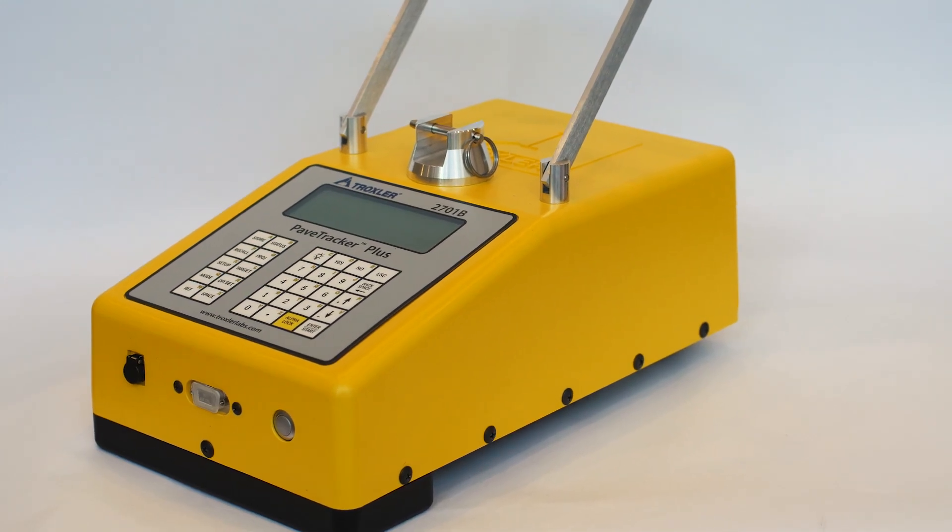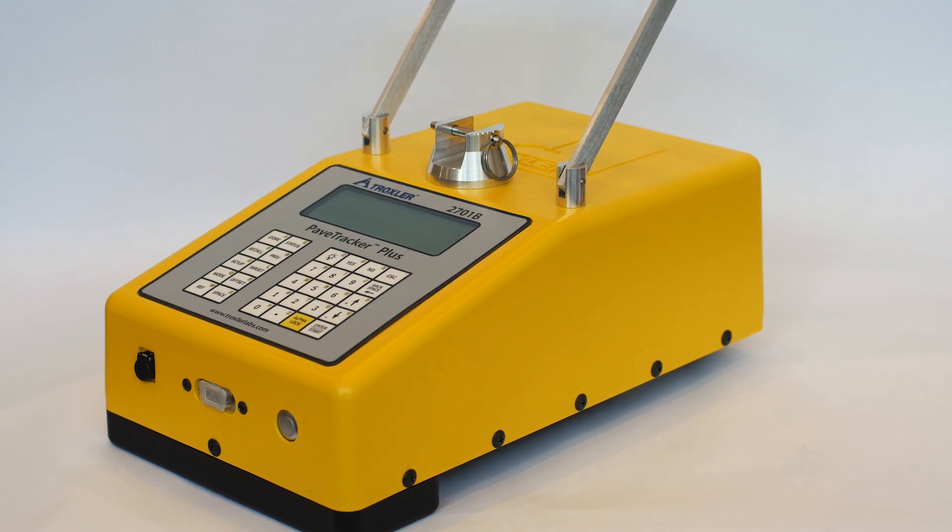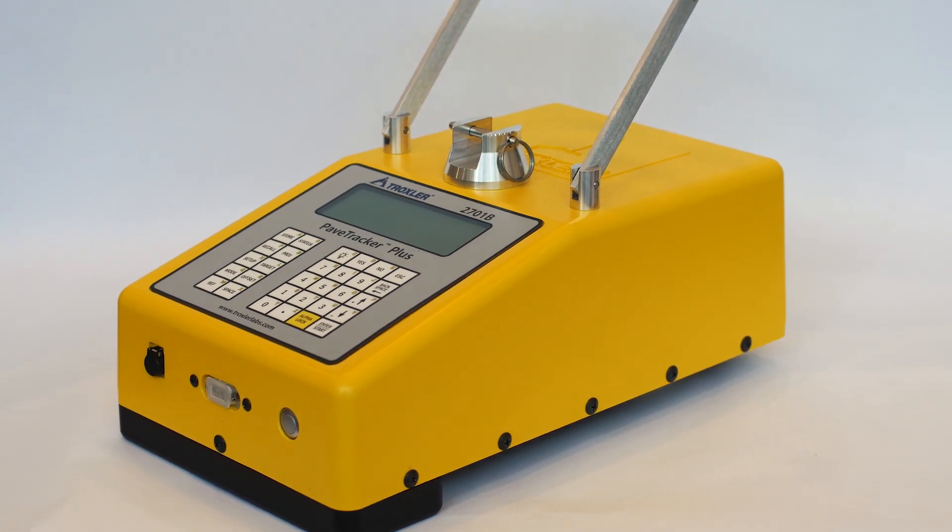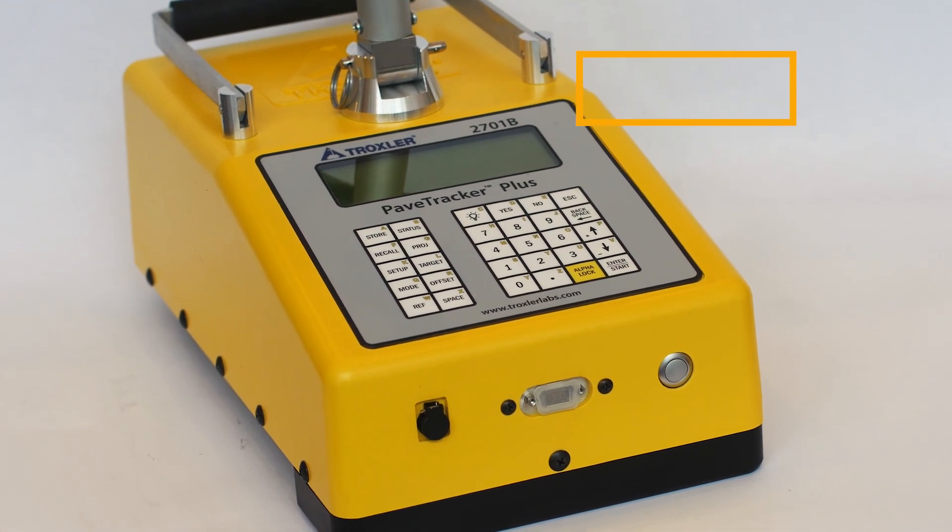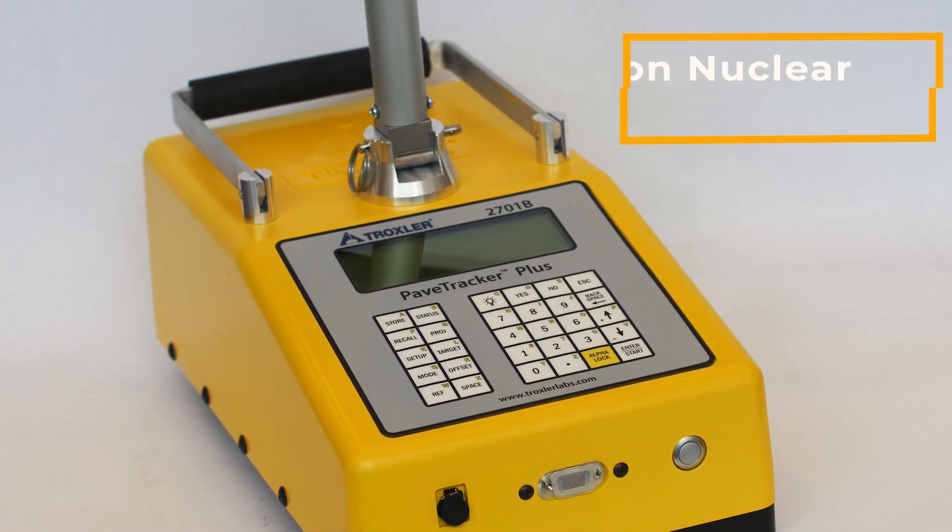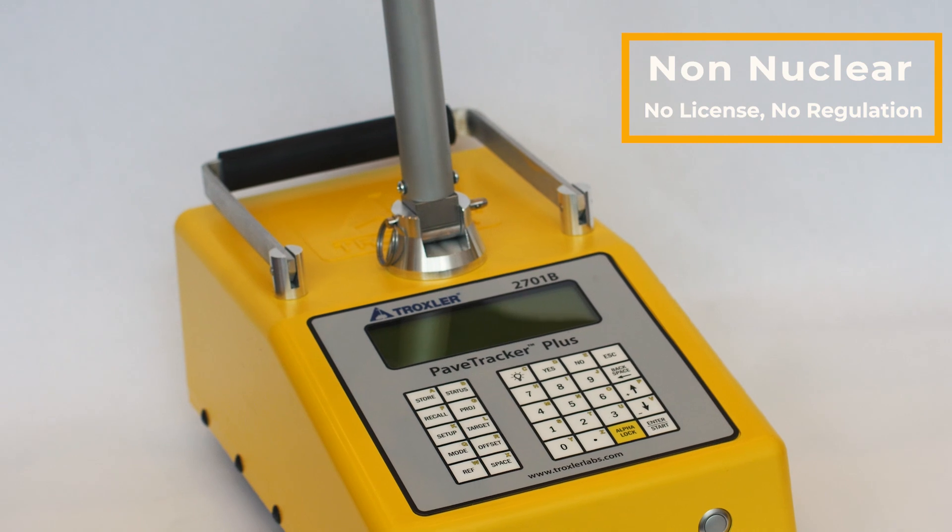The Pave Tracker Model 2701B Plus is an electromagnetic density indication device for asphalt quality control measurements. This gauge contains no radioactive material, so no licensing or special training is required to own or operate this equipment.